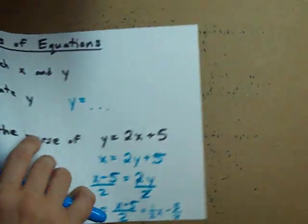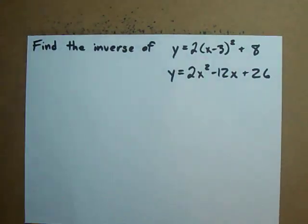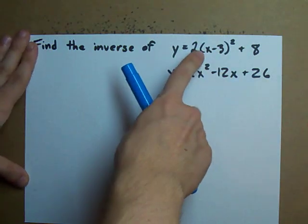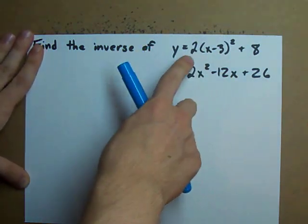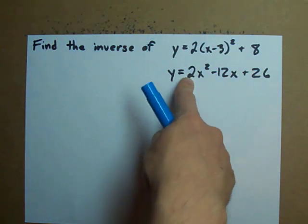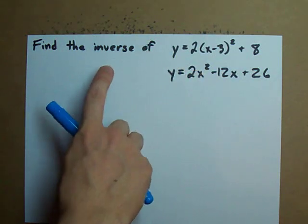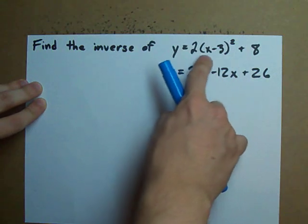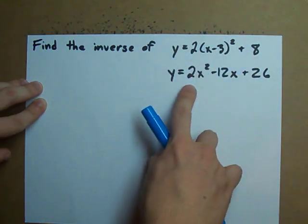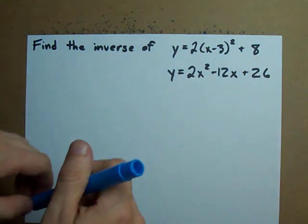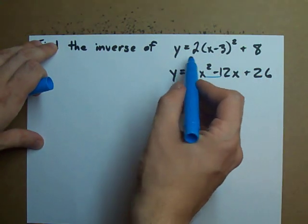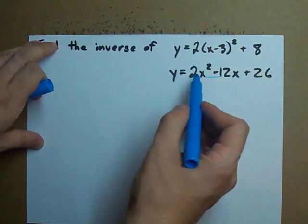A question you're more likely to see is finding the inverse of a parabola. Now I have written the same equation in two different ways here to point something out. When you're finding an inverse, it must be in vertex form, which is what's on top here. It cannot be in standard form like this one. You will have a lot of trouble if it's written like this and it needs to be in vertex form.